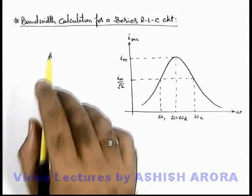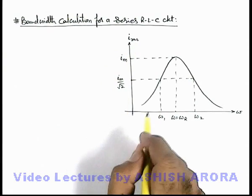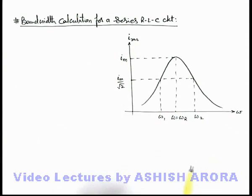Let us now understand the bandwidth calculation for a series R-L-C circuit. We have already drawn a graph for variation of current with frequency of alternating current source.